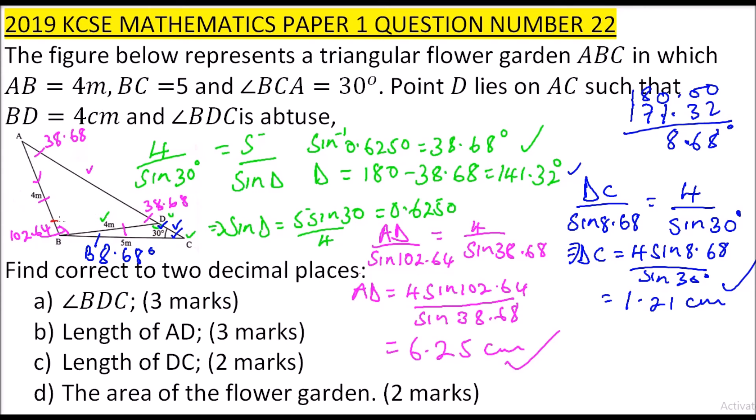We get that angle by adding this angle, that is 38.68 and angle 30, and you subtract from 180. You get the total angle here, that is the angle ABD and BDC. The total angle there will be 141.32. When you add 102.64 which we obtained here, and you add to 8.68,